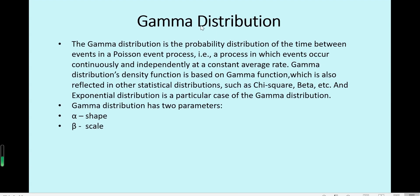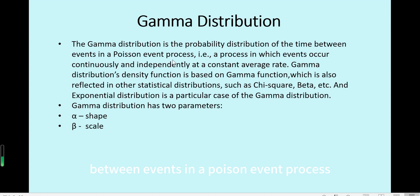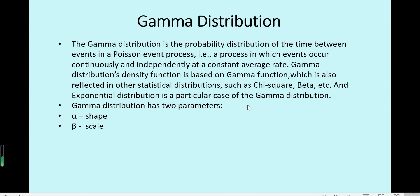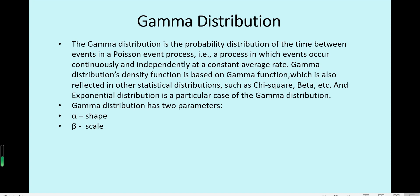First, we take a look at gamma distribution. The gamma distribution is a general probability distribution of time between events in a Poisson event process. The Poisson event process is a process in which events occur continuously and independently at a constant average rate. For example, if you want to know the distribution of telephone calls coming in to a call center during one day or a specific time interval, this is quite like a Poisson process.